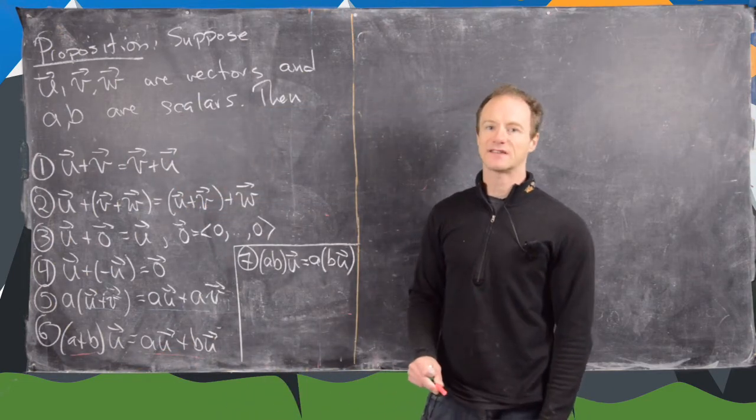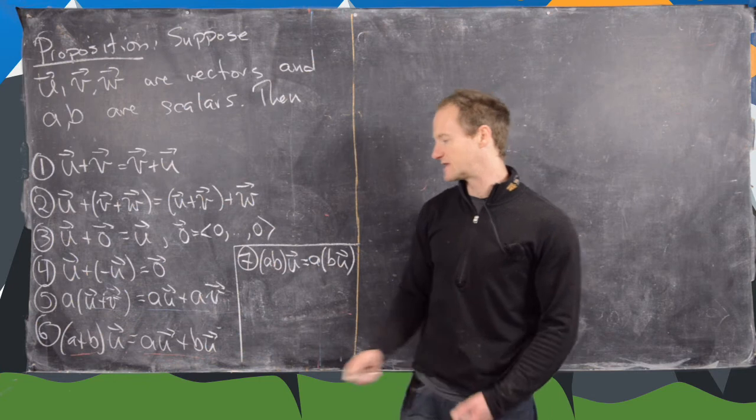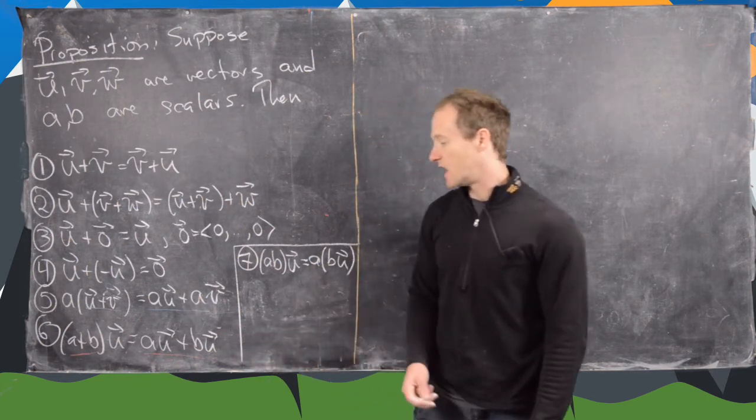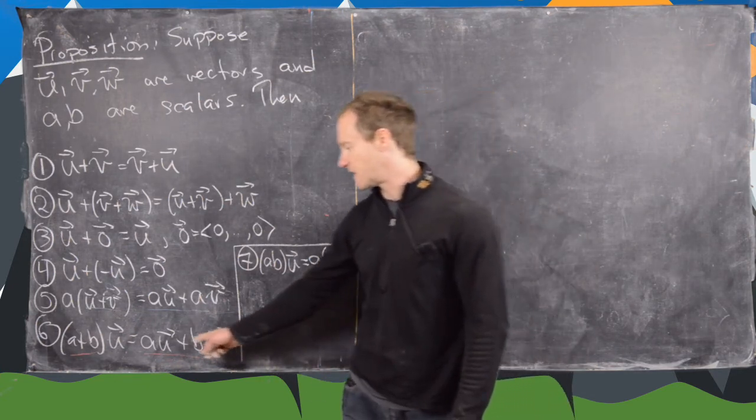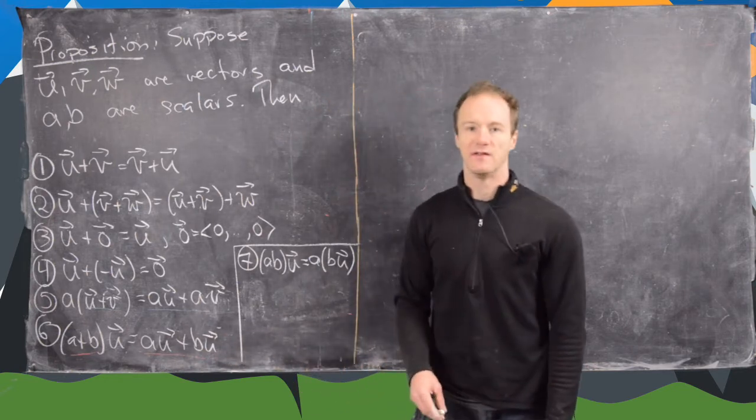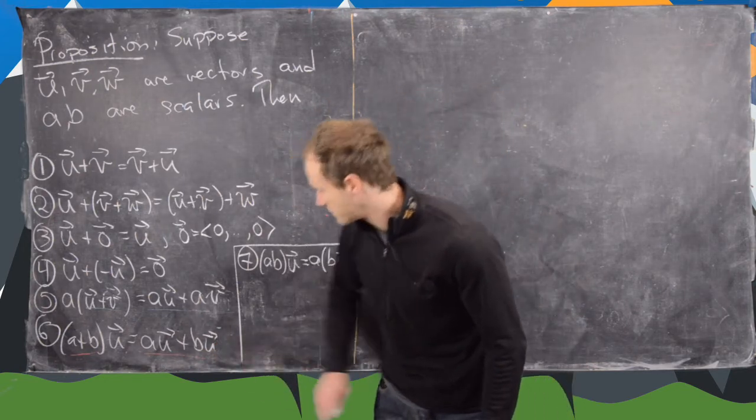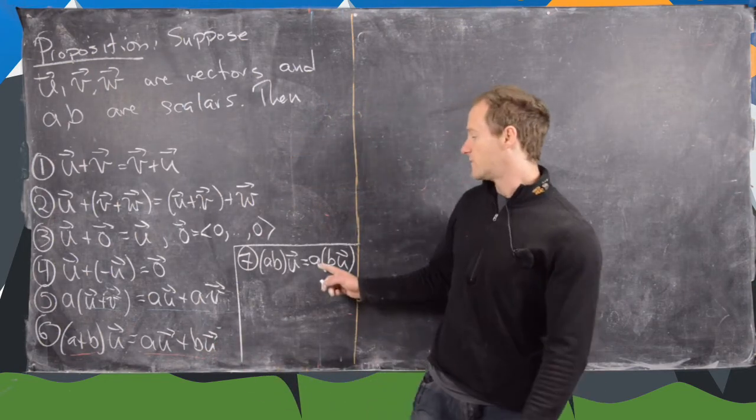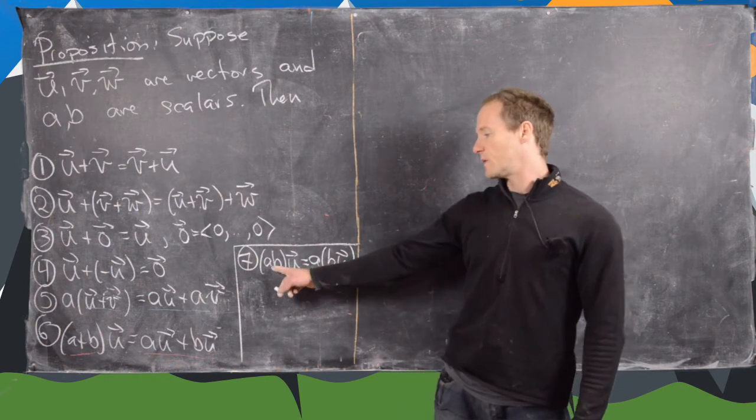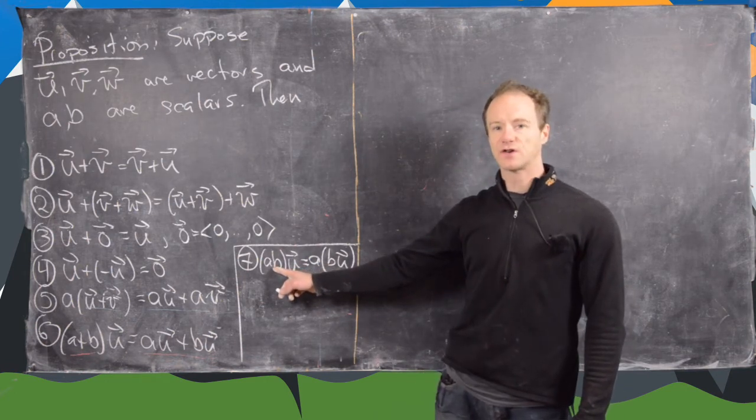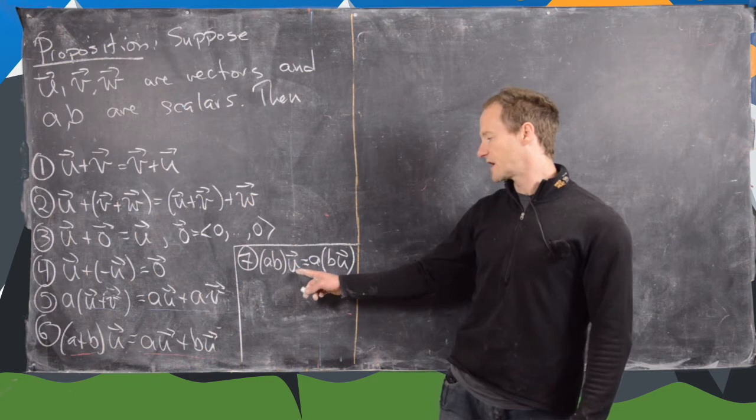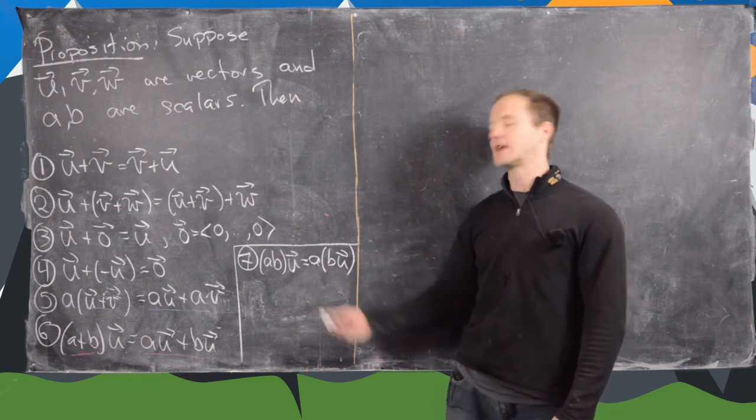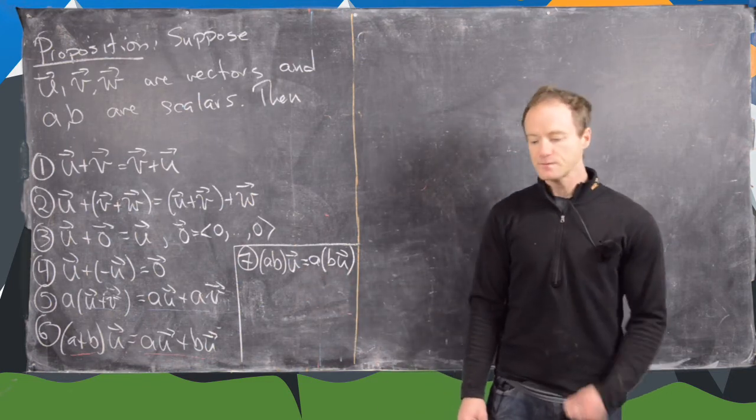Which is here we have scalar addition and vector addition. So if we add the scalars first and then distribute, that's the same thing as taking the scalar multiples and then adding. And then finally, we have this one so that we can multiply the scalars first and then do scalar multiplication, or we can do scalar multiplication one at a time. So let's prove maybe a few of these, although you'll see that they're all quite similar.